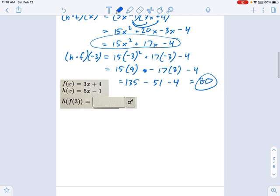Last one. This is more of a composition. And in this example, you should read this as h compose f of 3. That's really what's being asked here.